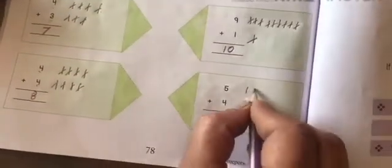Now 5 lines, then 4 lines. 1, 2, 3, 4. Count together: 1, 2, 3, 4, 5, 6, 7, 8, 9. Write here 9.